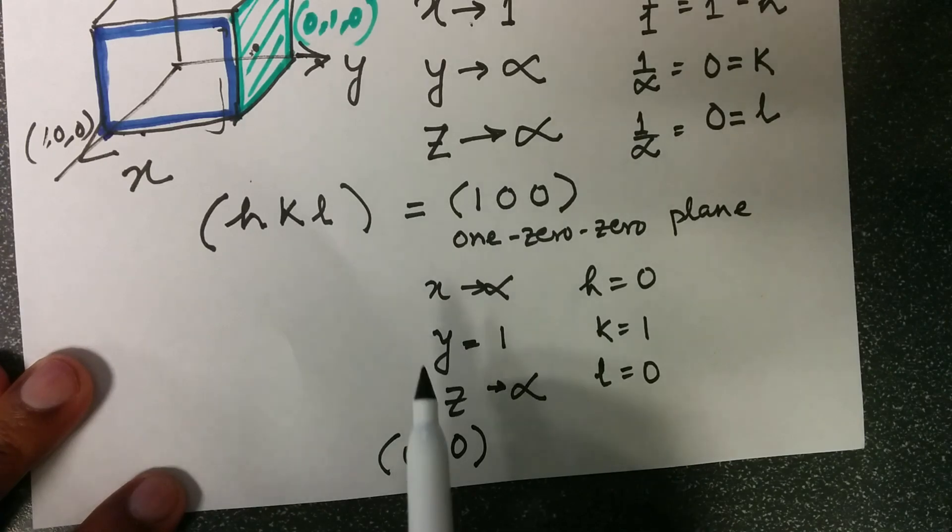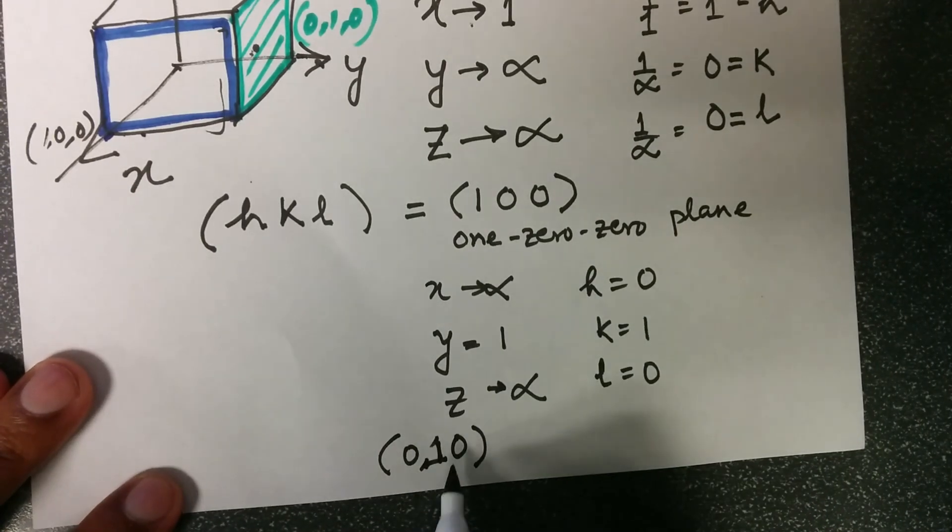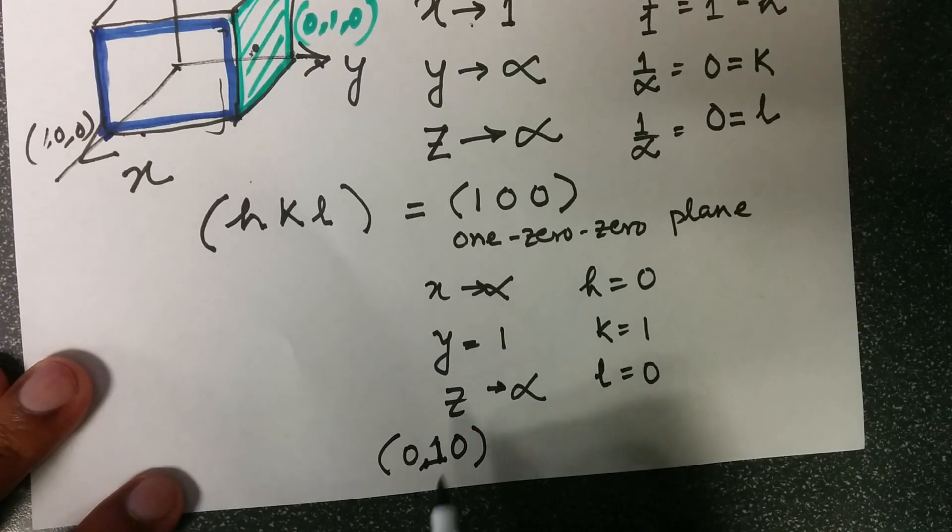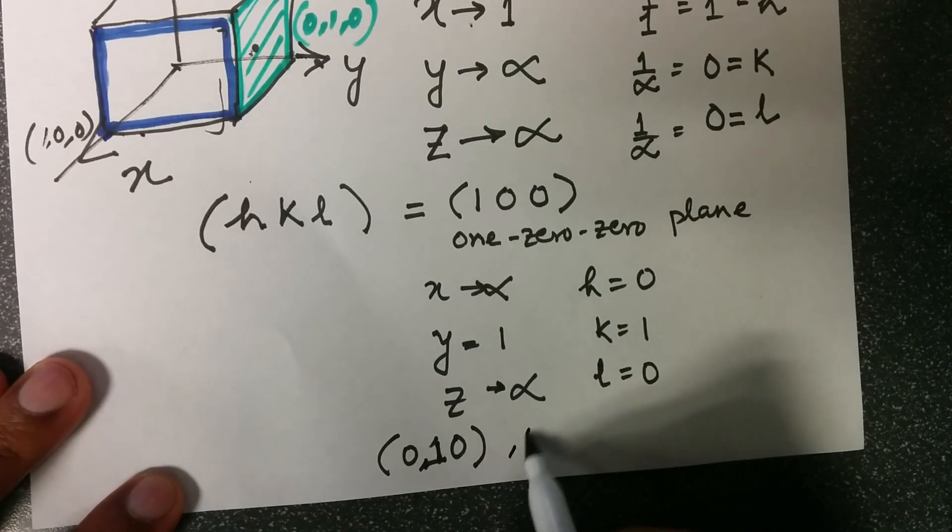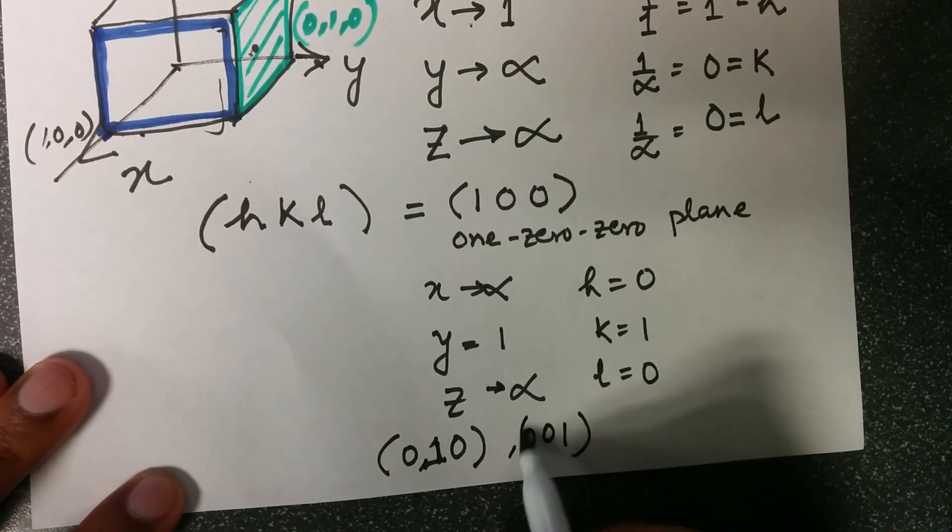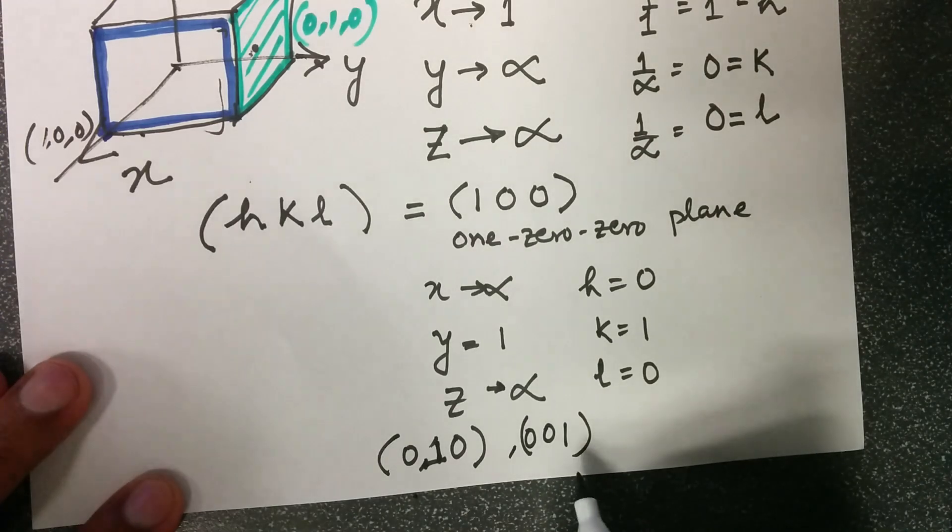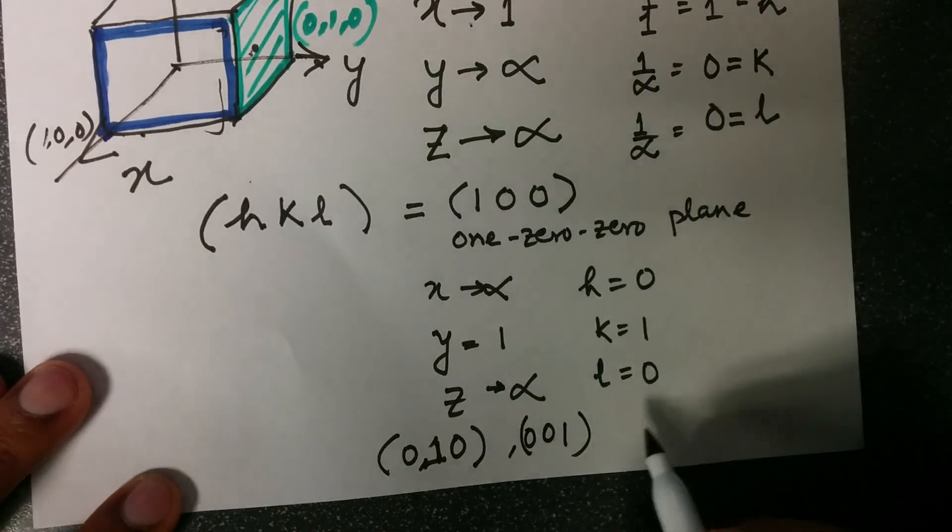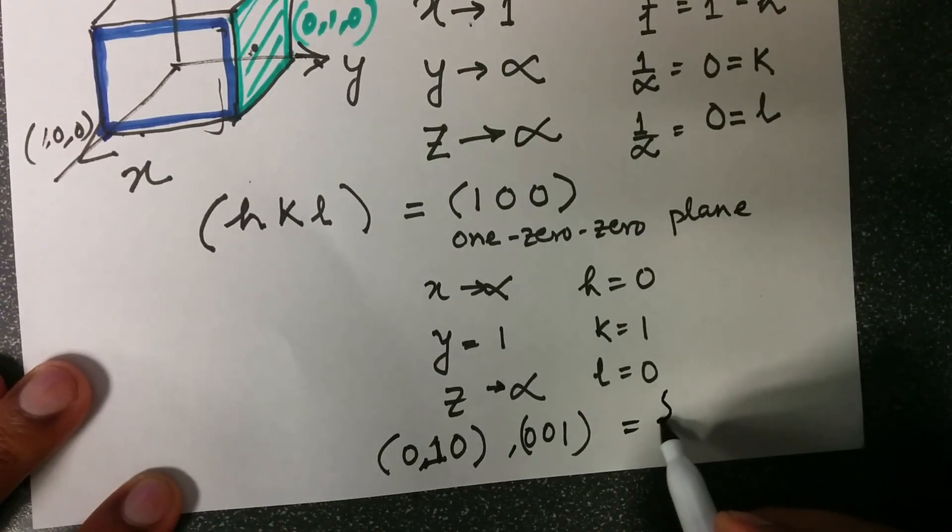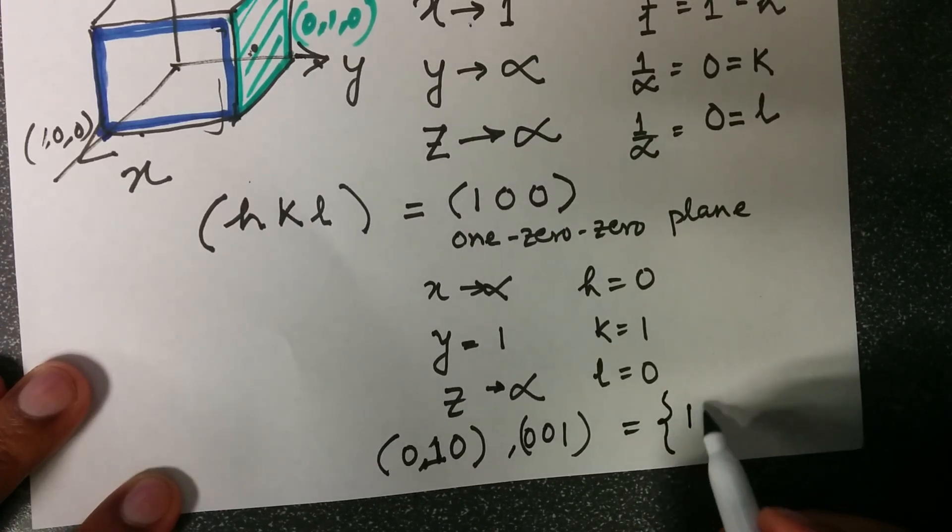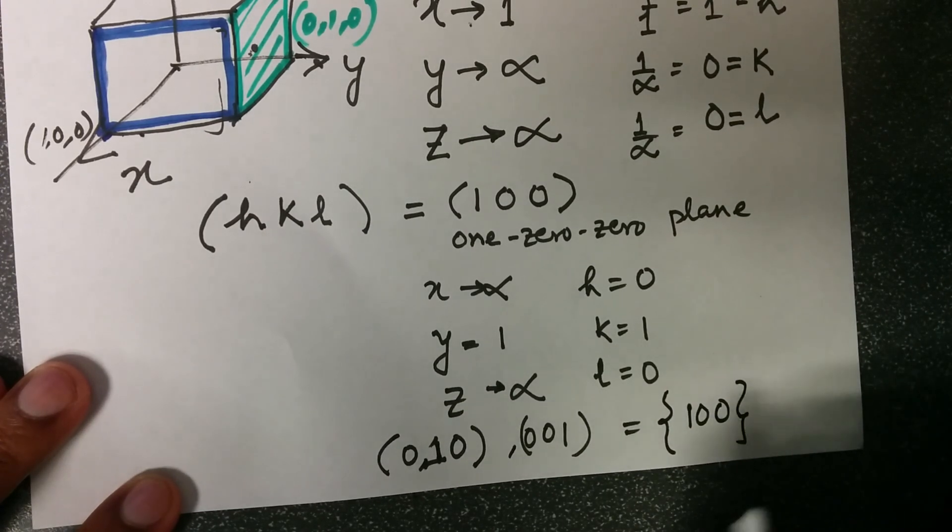However, (1 0 0) planes, (0 1 0) planes, and similarly (0 0 1) planes all could be written as a family of planes within this curly bracket as {1 0 0} planes.